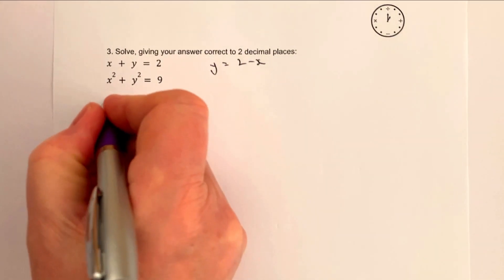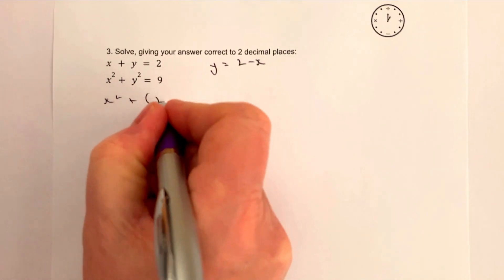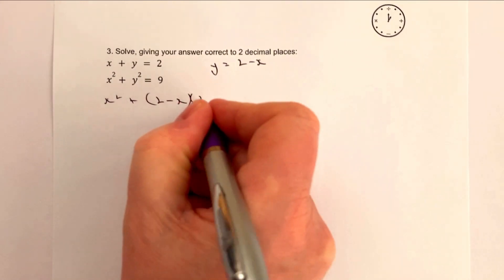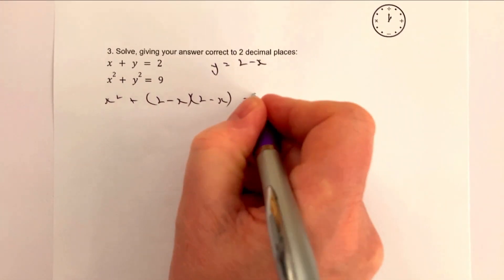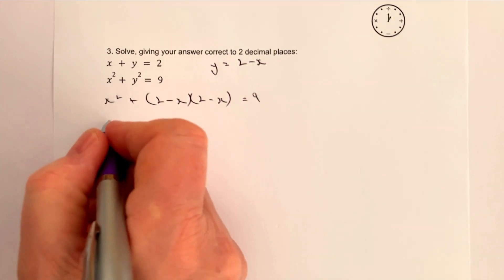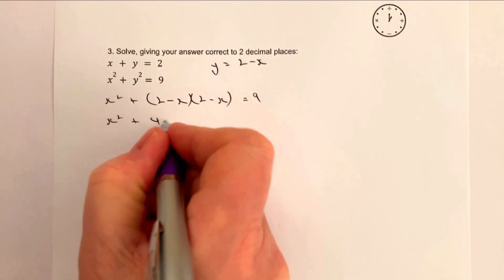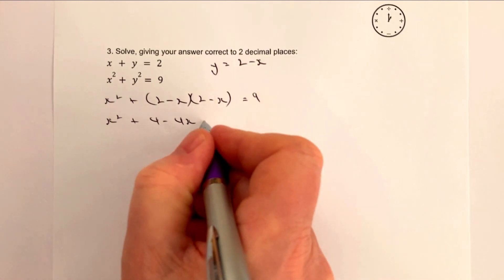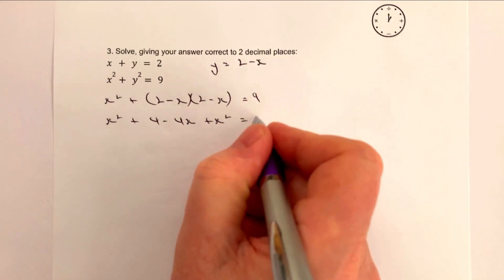Okay, so what I'll end up with is x squared plus 2 minus x multiplied by 2 minus x, and that equals 9. And then when I expand that out I'm going to get x squared plus 4 minus 4x plus x squared equals 9.